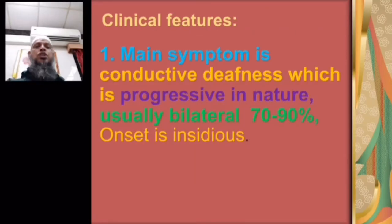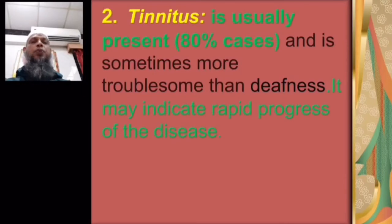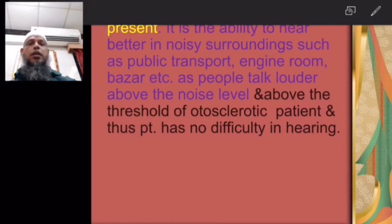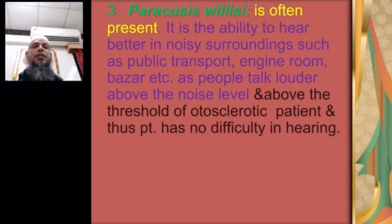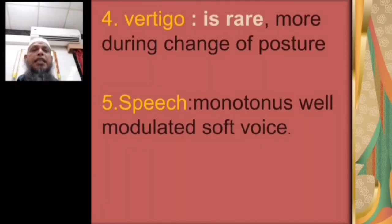Clinical features of otosclerosis: the main symptom is progressive conductive deafness, usually bilateral in 70–90% of cases, with insidious onset. Second is tinnitus, present in 80% of cases, sometimes more troublesome than deafness, and may indicate rapid progress of the disease. Third is paracusis willisii — the ability to hear better in noisy surroundings such as public transport, engine room, or bazaar, as people talk louder above the noise level. Fourth is speech: monotonous, well-modulated soft voice. Vertigo is very rare.